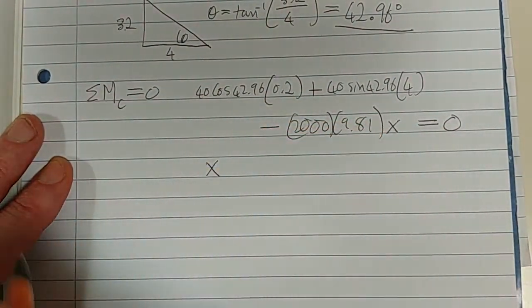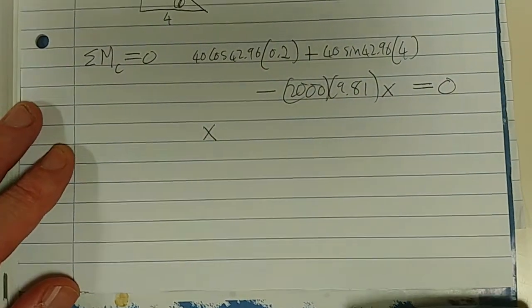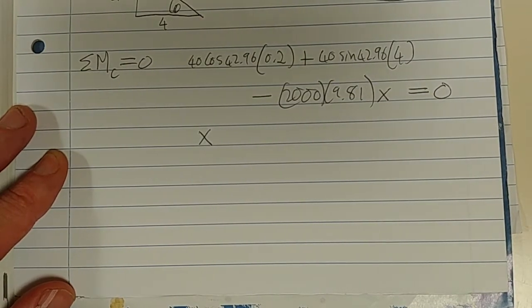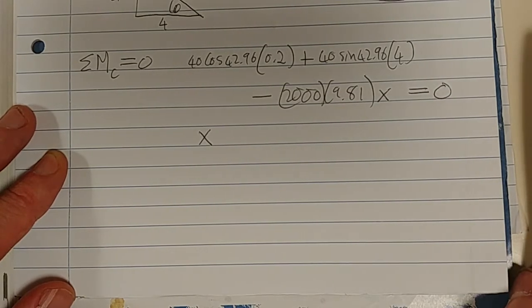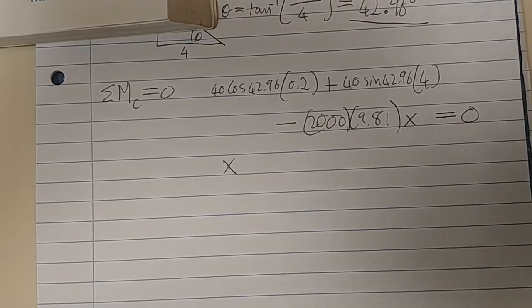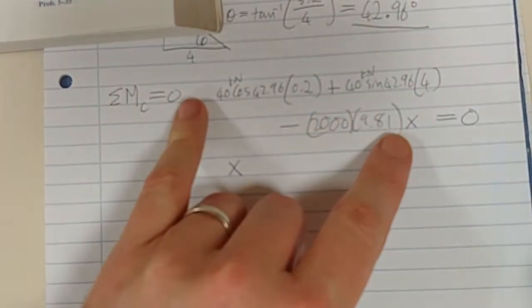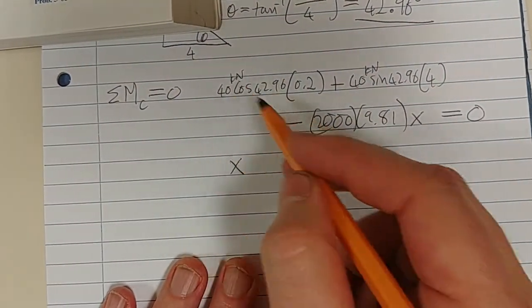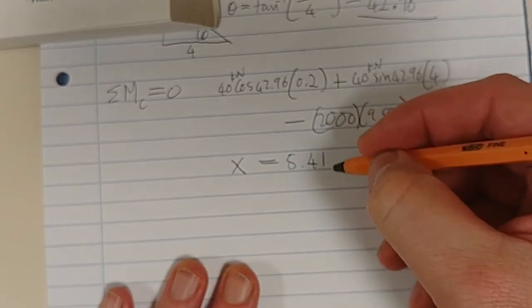Then if you solve for this, I left my solution somewhere else. So I'm just going to have to quickly calculate this. 40 cos 42.96 times 0.2 plus 40 sin 42.96 times 4 equals divided by 2,000. I made a mistake. It should be 40. It should be 40 kilonewton here. It should be 40 kilonewton. So the error was there. But if you put in 40 kilonewton and you solve for X, you should get something to the effect of 5.41 meters.